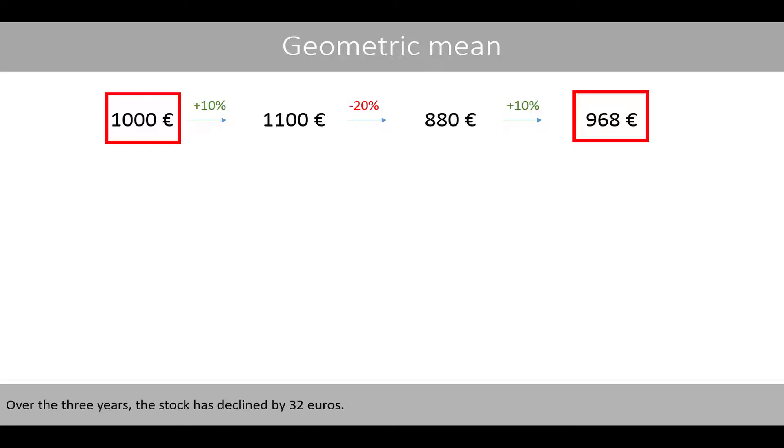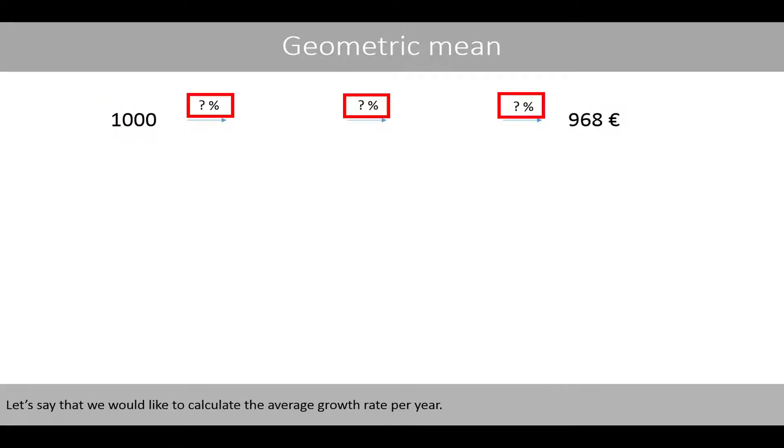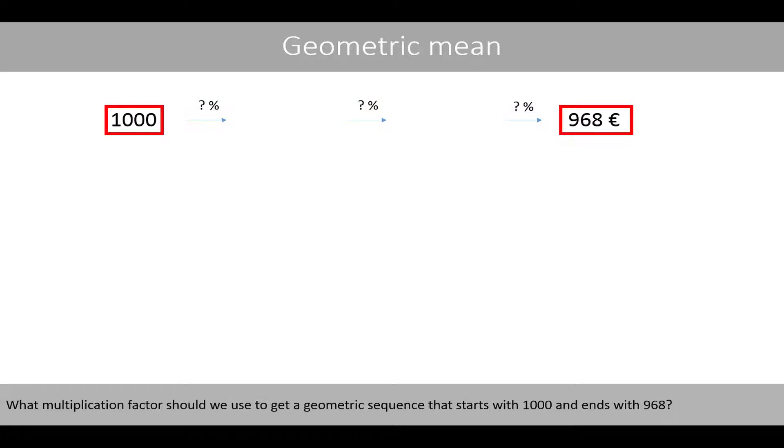Over the three years, the stock has declined by 32 euros. Let's say that we'd like to calculate the average growth rate per year. What multiplication factor should we use to get a geometric sequence that starts with 1,000 and ends with 968?